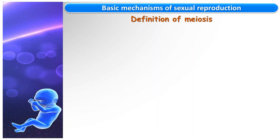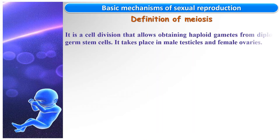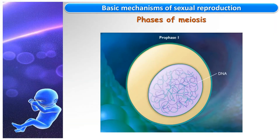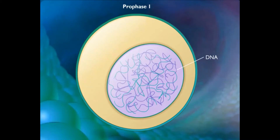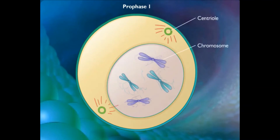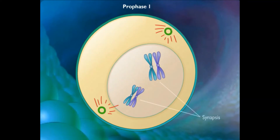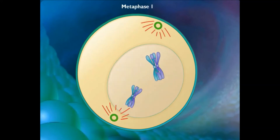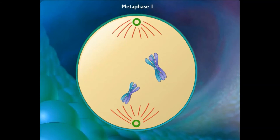Meiosis is a cell division that allows obtaining haploid gametes from diploid germ stem cells, and it takes place in male testicles and female ovaries. Let's watch this video: at the beginning, the DNA is in a filamentous aspect, which means the cell is during interphase.